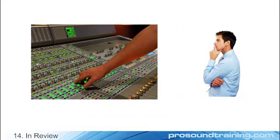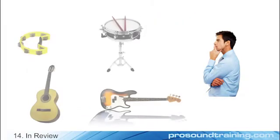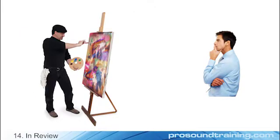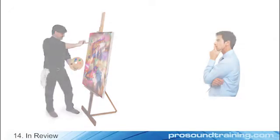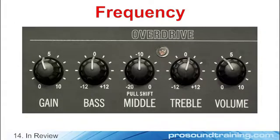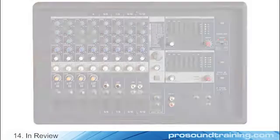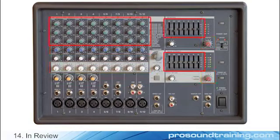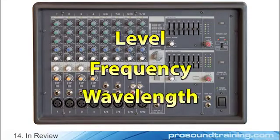The art of mixing involves achieving a pleasing level balance between the program sources. This is much the same way that an artist blends colors to achieve what they see in their mind. The spectral balance of a signal is modified by a filter. An experienced system operator may use the filters on the channel strip to improve the sound quality of the voice or instrument, a purely subjective process. Most of the knobs on audio gear change either the audio level or spectral balance. This makes the concepts of level, frequency, and wavelength of vital importance in understanding audio systems.